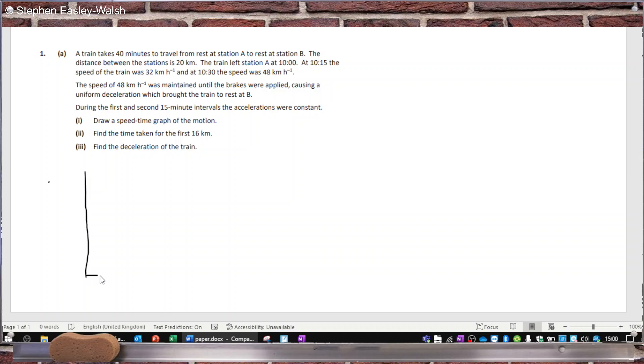If we just read the story here, it starts at rest and makes it up to 32, and that took 15 minutes or a quarter of an hour. If we're using hours, this is time in hours and then this one will be speed in kilometers per hour. So the train left at 10:15 at 32, and then the speed then becomes 48.